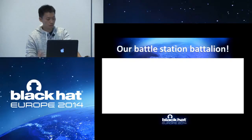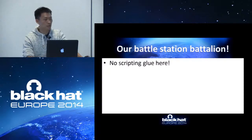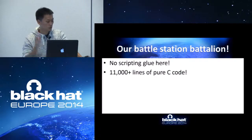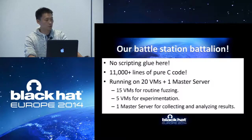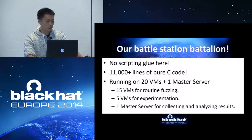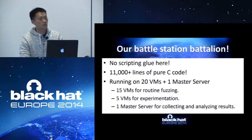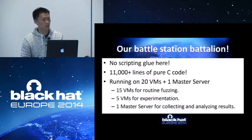Now I would like to talk about the implementation details. We don't use Ruby or Python — all of our implementation is in C. We have 20 VMs and one master server. Fifteen VMs are for routine fuzzing, and five are for experimentation because we always have new ideas or new pairings to try. We have a 'one million sample rule': if we have a new idea and after one million samples we find nothing interesting, we stop — probably that direction is wrong or that module is very robust.